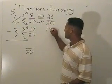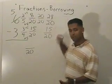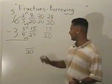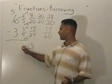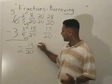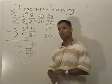And now we can subtract 15/20 from 28/20. And 28 take away 15 gives us 13. And now we take 5 and 3 and subtract those, and that gives us 2. And we can now reduce 13 out of 20, so 2 and 13/20 is the answer.